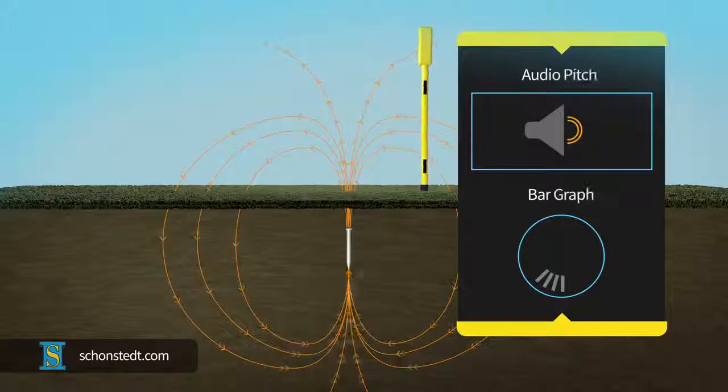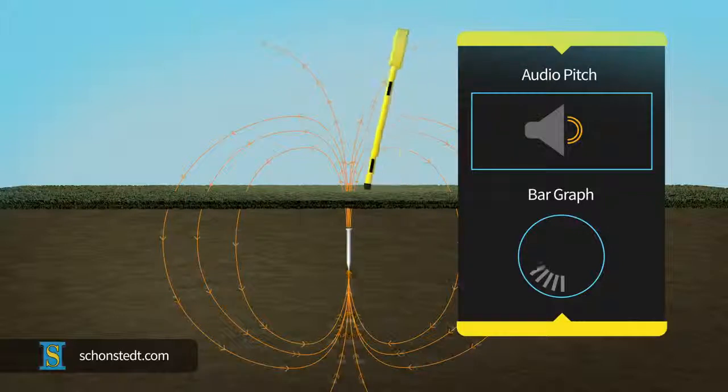Schonstedt locators indicate the detection of a gradient to the user by changing the pitch of an audio tone, and, depending on the model, with a bar graph on a visual display.